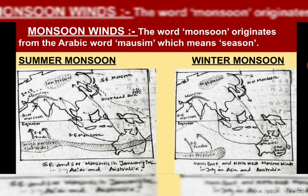These winds move towards the Indian subcontinent and cause heavy rainfall. During the summer, the landmass of the Indian subcontinent experiences very high temperatures, creating low pressure, whereas the coastal and adjoining areas experience high pressure. Because the sea takes longer to heat, the direction of wind during summer is from sea to land. As you can see in the diagram, low pressure is present in the landmass area while high pressure is present in the sea and coastal areas.